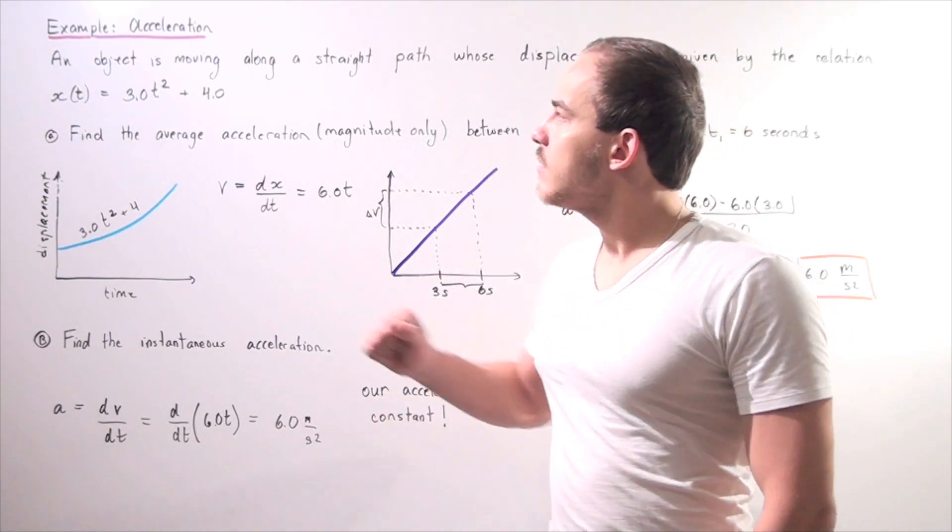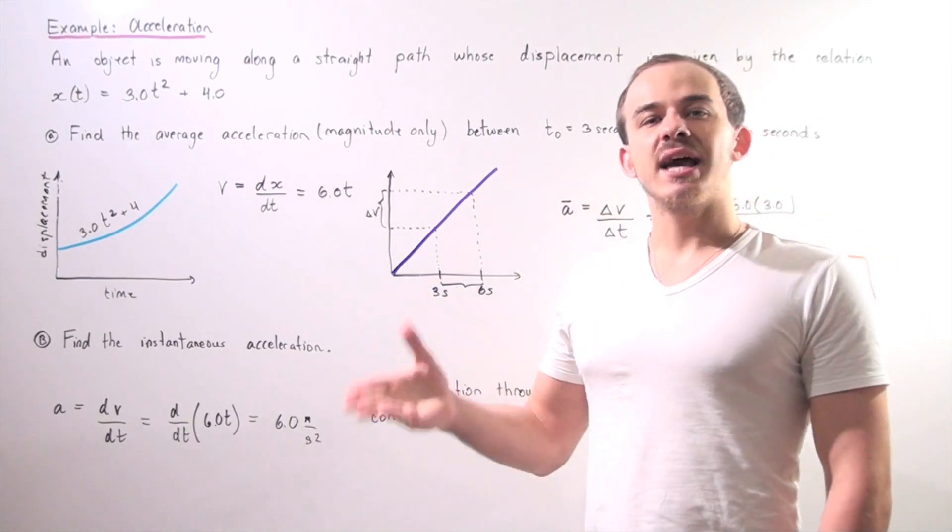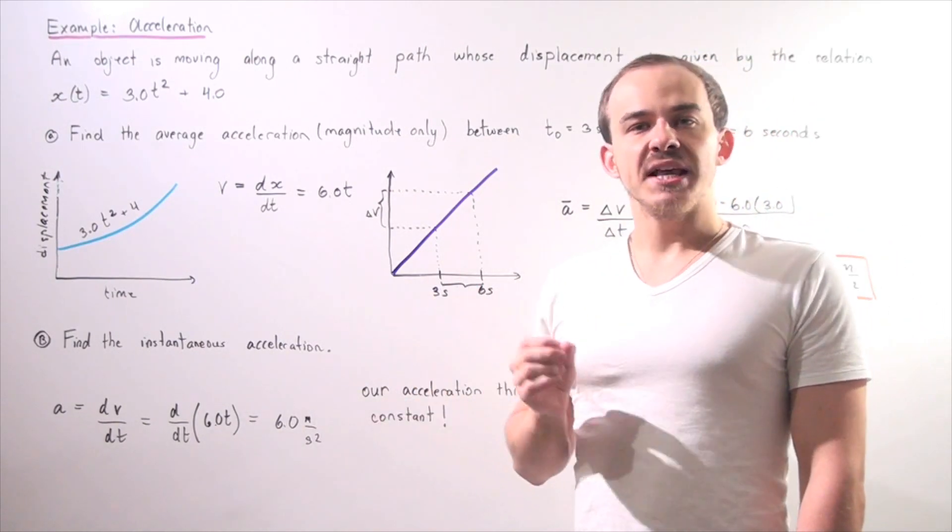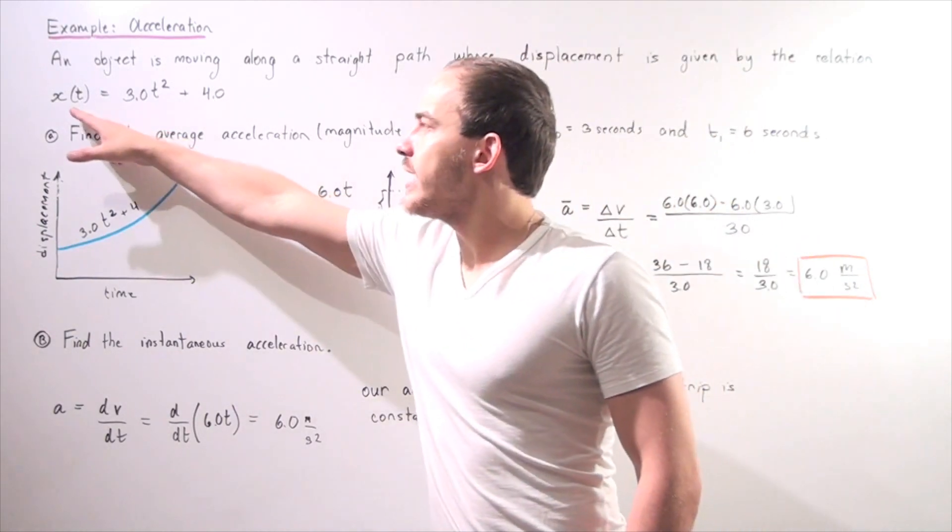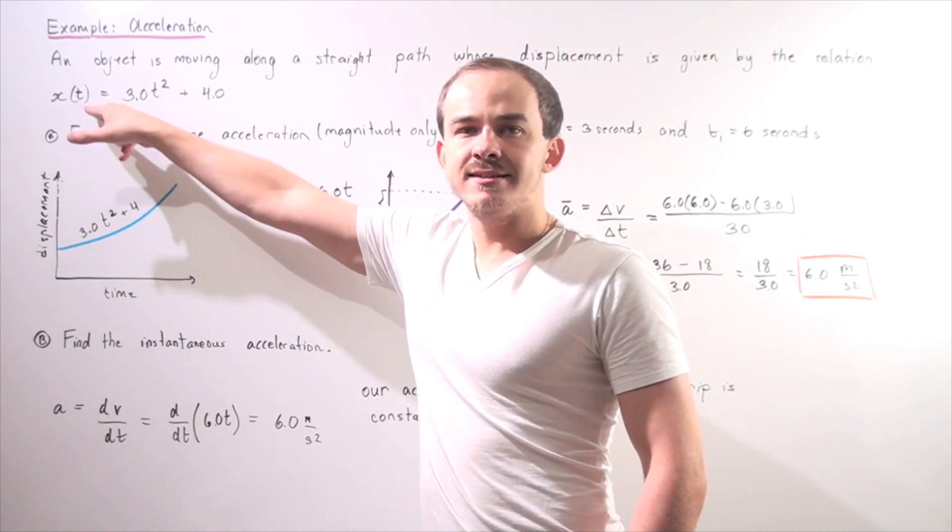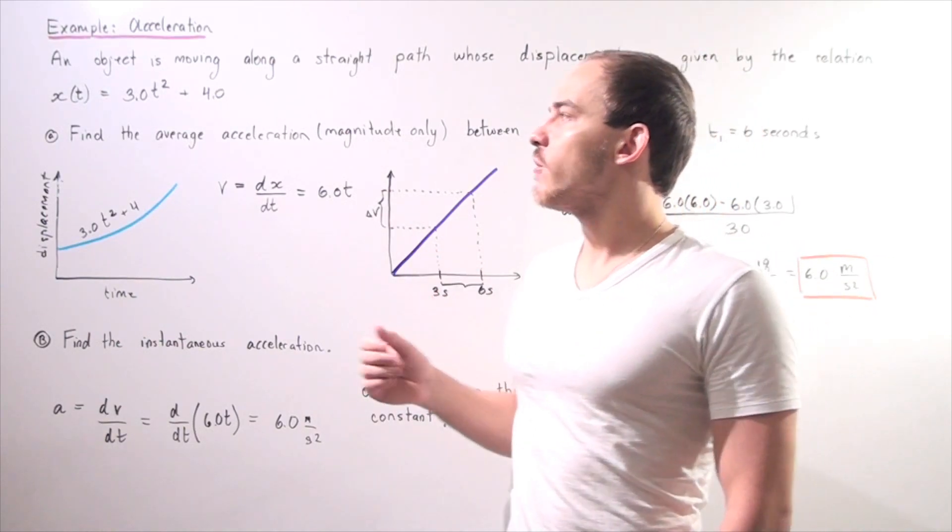So let's examine the following problem. An object is moving along a straight path, let's say along the x-axis, whose displacement or position function is given by the following equation: x(t) = 3.0t² + 4.0.